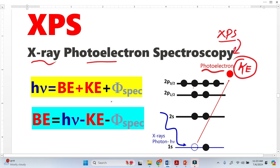Now we know that initially this photon has known energy from the X-ray source, and it is equivalent to the binding energy of the electron, the kinetic energy of the photoelectron, and this is the work function of the spectrometer, not the sample.